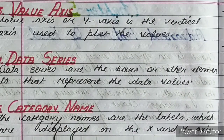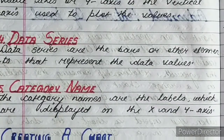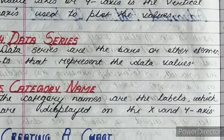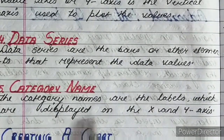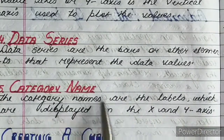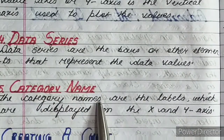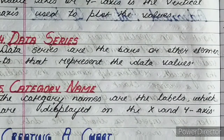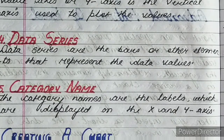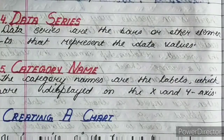Next is category name — do not confuse this with category axis, which you studied before. Category names are the labels which are displayed on the x and y axis. So these are the components of charts. In our next class we will discuss how to create a chart.